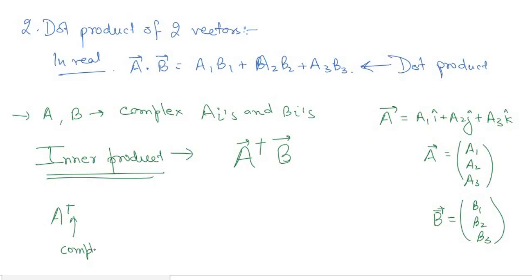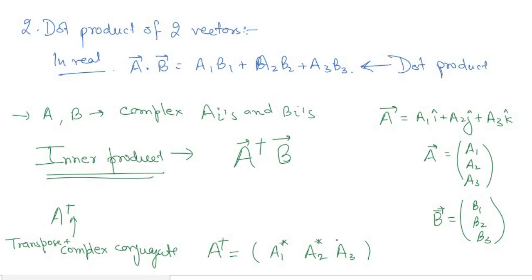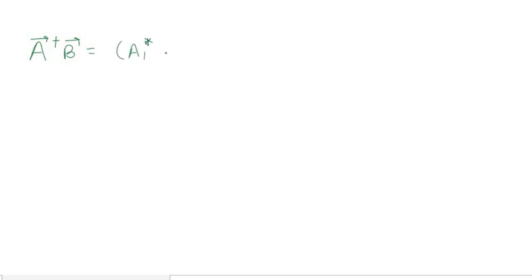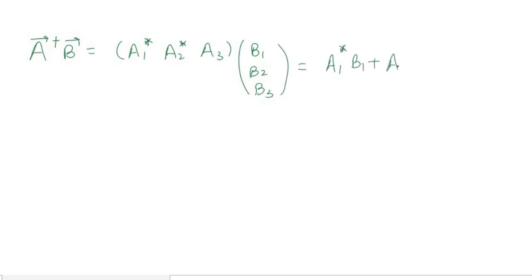The dagger operation means transpose plus complex conjugate. So A† is obtained by first transposing A to get [a₁, a₂, a₃], then taking its complex conjugate, giving [a₁*, a₂*, a₃*]. The inner product A†B is then [a₁*, a₂*, a₃*] multiplied by [b₁, b₂, b₃]ᵀ, which equals a₁*b₁ + a₂*b₂ + a₃*b₃.